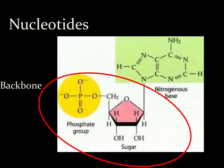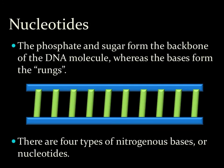As we build on the structure of the DNA molecule, the backbone — or the sides of the ladder — are alternating sugars and phosphates: sugar, phosphate, sugar, phosphate, sugar, phosphate — making up the sides of the ladder. The nitrogenous bases make up the rungs of the ladder.